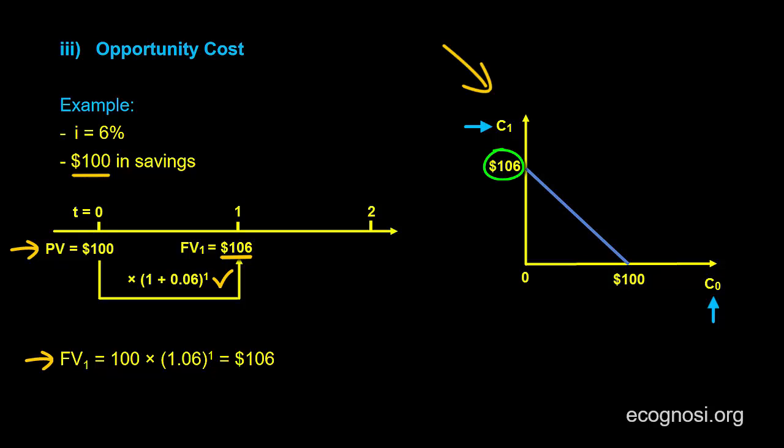But this, in similar fashion to before, would mean zero consumption today. Again see the graph, move from the $106 on the y axis, for the corresponding point on the x axis, which is zero, as I deposited everything today and consumed $106 in a year's time.